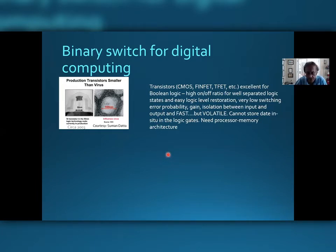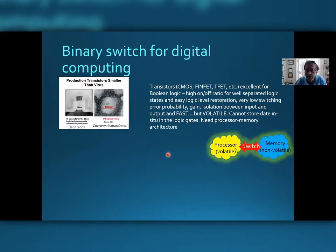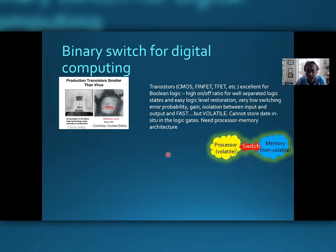Being a charge-based device, the transistor is volatile and therefore it cannot retain information once it's powered off. That causes some necessary evils such as a processor-memory partition. The volatile devices are in the processor doing the processing, and the instruction sets are stored in memory, and every time one executes a computer program one has to fetch data back and forth between the processor and memory, which slows up the computation and causes reliability issues.